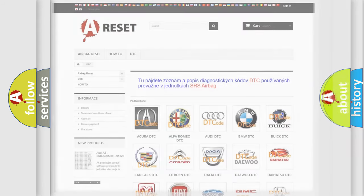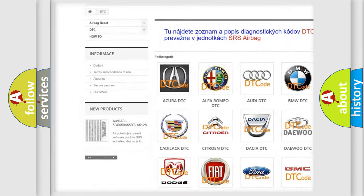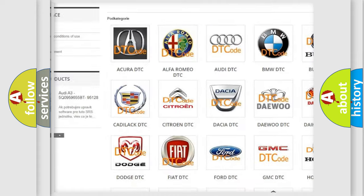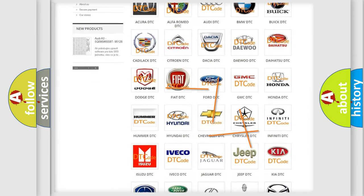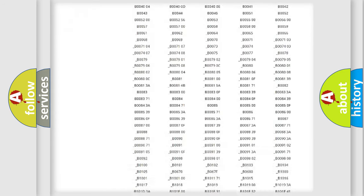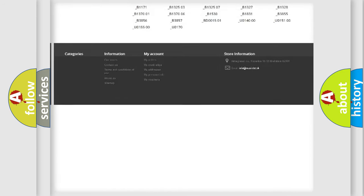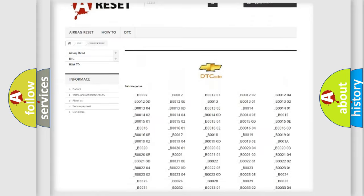Our website airbagreset.sk produces useful videos for you. You do not have to go through the OBD2 protocol anymore to know how to troubleshoot any car breakdown. You will find all the diagnostic codes that can be diagnosed in Chevrolet vehicles.